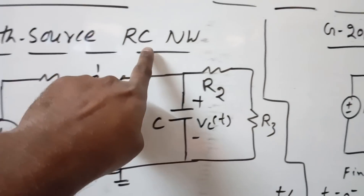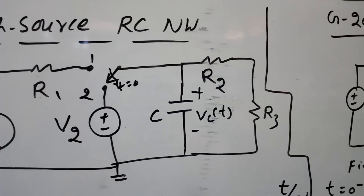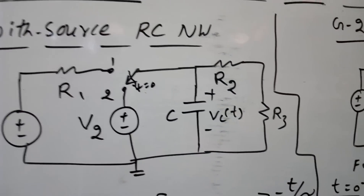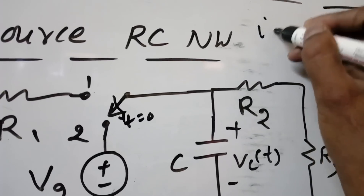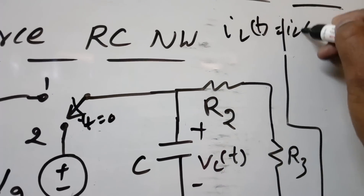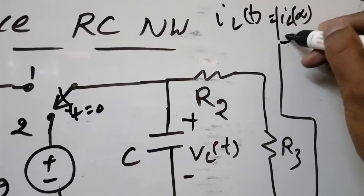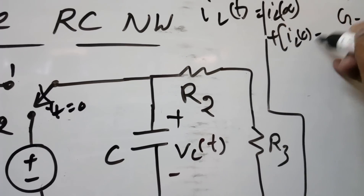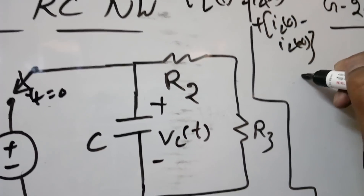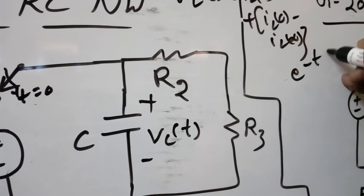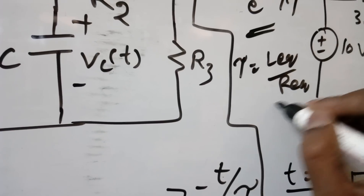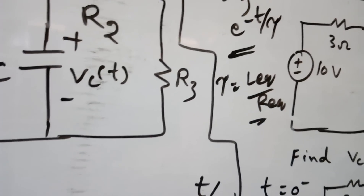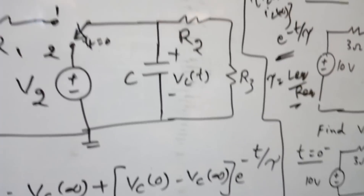For the RL network, the analogous formula is: iL(t) = iL(∞) + [iL(0⁻) − iL(∞)] × e^(−t/τ), where τ = L_equivalent / R_equivalent, or simply L / R_equivalent.